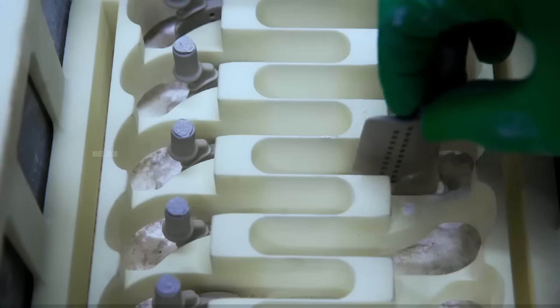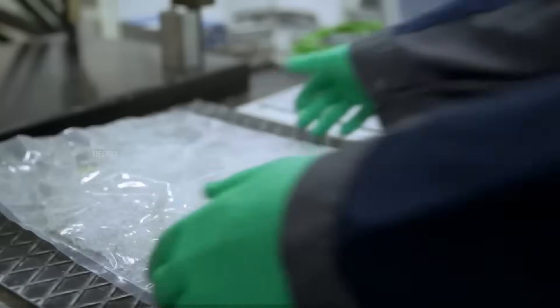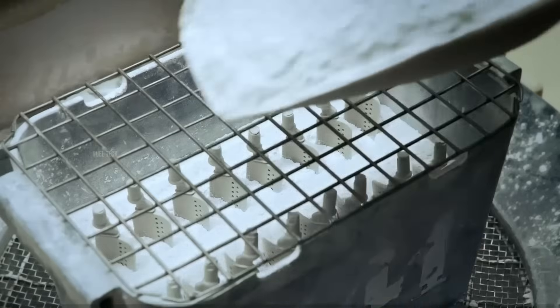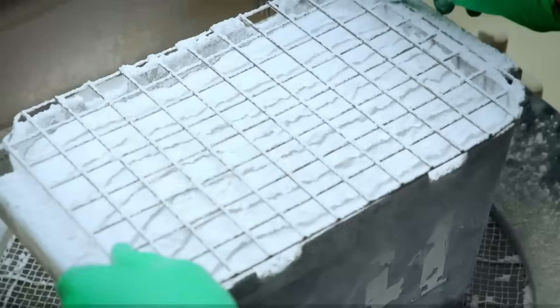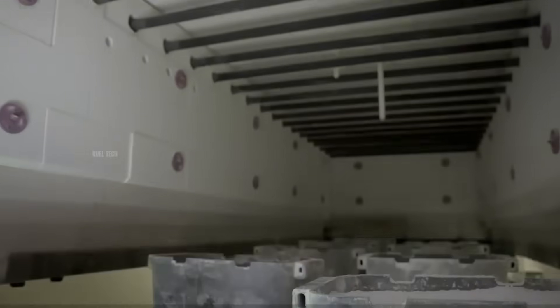Inside the wax pattern, a ceramic core is inserted to form the internal cooling channels. The core is made by compressing ceramic powder with a binder, then heating it to harden and strengthen it.